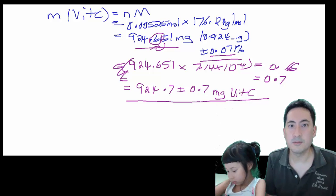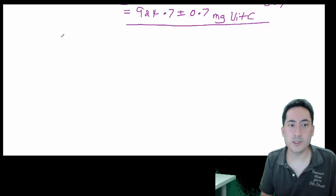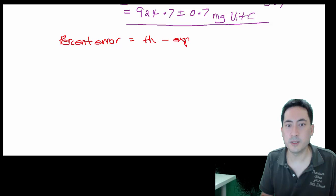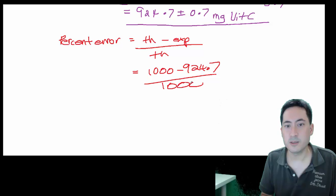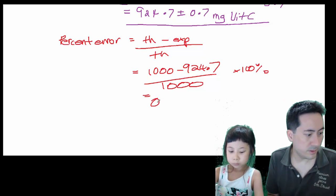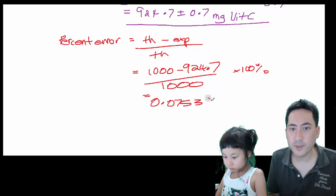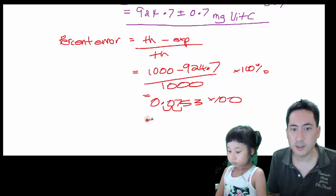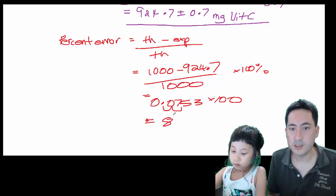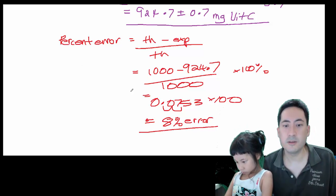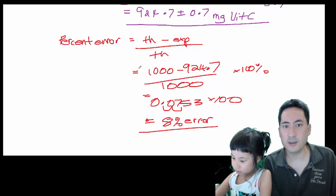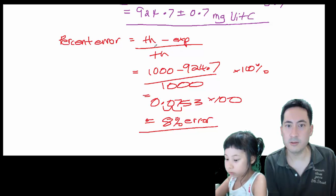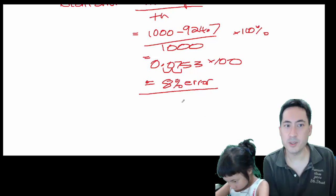We then have to work out what the actual percent error is, and so the tablet, it was actually 1000 milligrams. So the percent error equals the theoretical minus the experimental over the theoretical. So it's 1000 minus 924.7 over 1000, and that's times by 100%. And so that comes to 0.0753 times 100. Usually just keep it to one sig fig, and so that gives you an 8% error. So I hope that's helpful. That's how you do the vitamin C calculations, and for your IA as well, it also includes how to do the percent uncertainty propagation and the percent error.